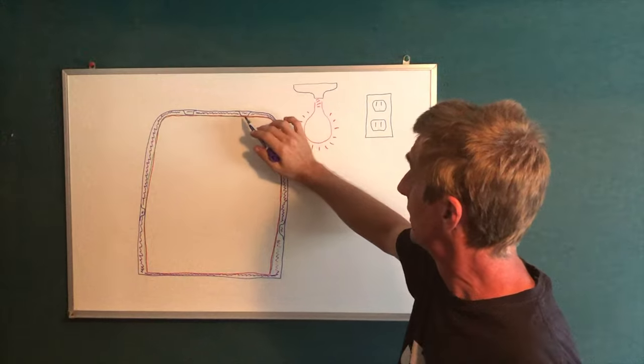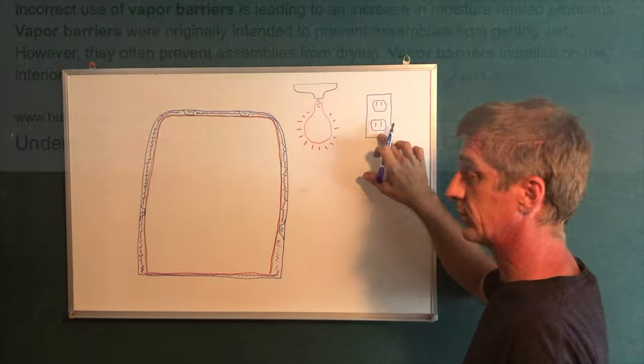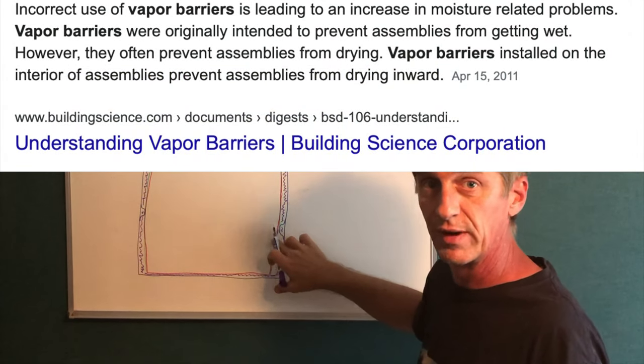Everywhere you have a light fixture there's a penetration through that vapor barrier. Every place you have an electrical outlet, whether it's house current or 12 volts or a USB port, there's a penetration through that vapor barrier.